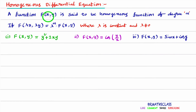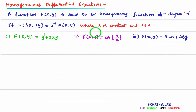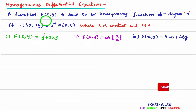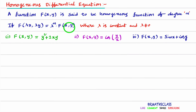A function f is said to be a Homogeneous Function. Consider a function in two variables x and y. You can observe here three examples which are functions in x and y. This function is said to be a Homogeneous Function of degree n when we calculate f(λx, λy) and get an expression of the form λⁿ into f(x, y).